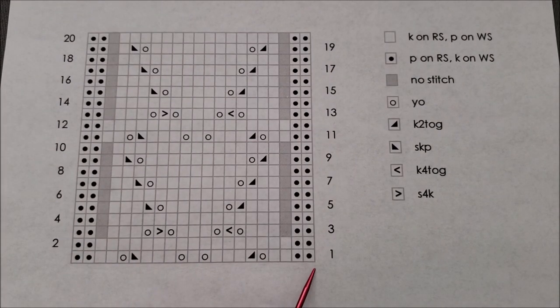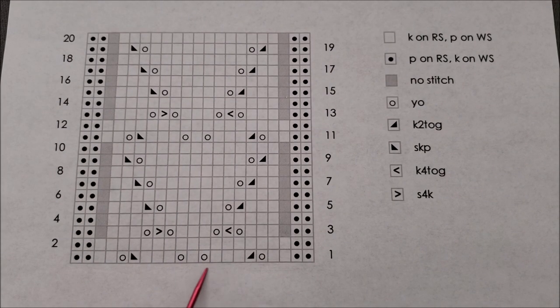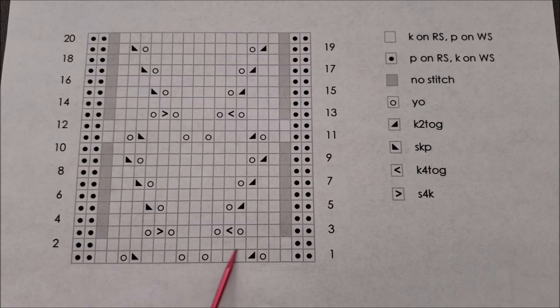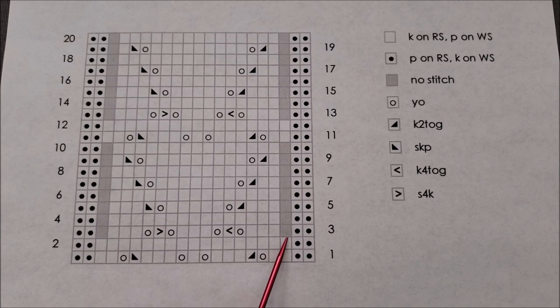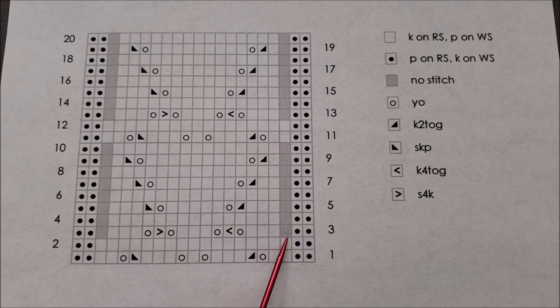So, you start knitting and following your chart across one row and then another, and all of a sudden you're at this square that means no stitch. But how the heck do you knit no stitch?